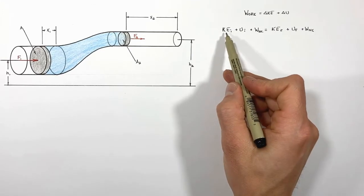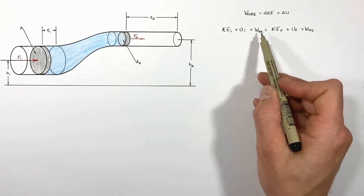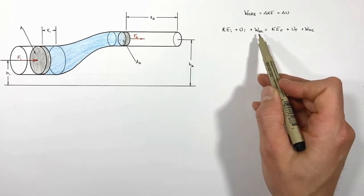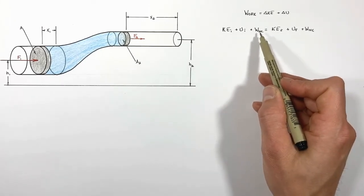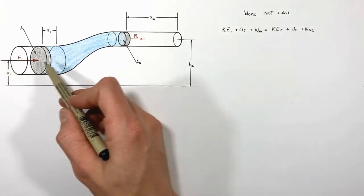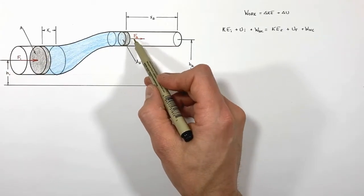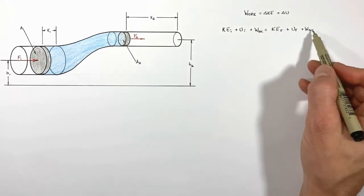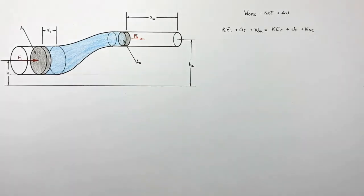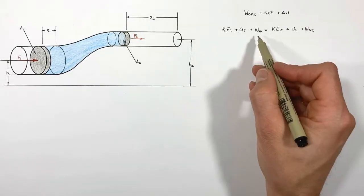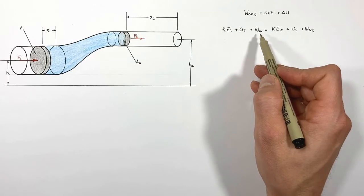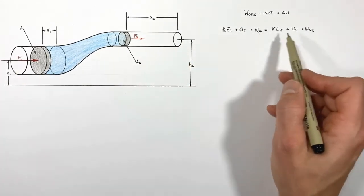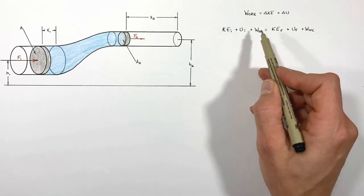We have initial and final kinetic energies, initial and final potential energies, and then we have these non-conservative work terms — that is, work being done on the system by any outside force. In this case, we have a force acting on the input piston and another force acting on the output piston. So we've got work going into the system and work going out of the system. It's this idea of work that gets lost in how most people present Bernoulli's equation, and that's what I want to drive home today — what happens with this work and how it relates to what is commonly called pressure energy.